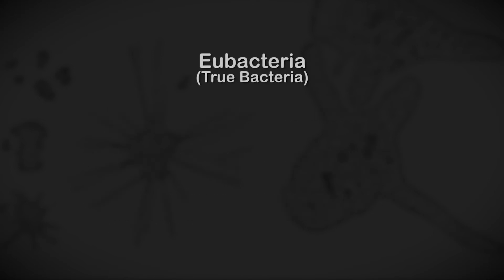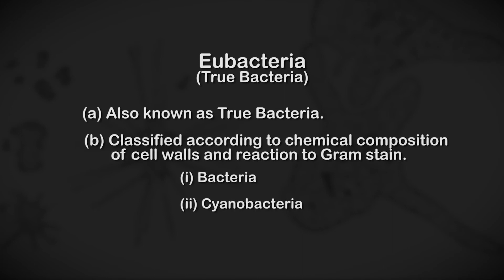Eubacteria is true bacteria. It is also classified into bacteria and cyanobacteria according to the chemical composition of cell walls or reaction to gram stain. The cell wall is made of either cellulose or acetylglucosamine, which is a particular kind of component peculiar to these bacteria.